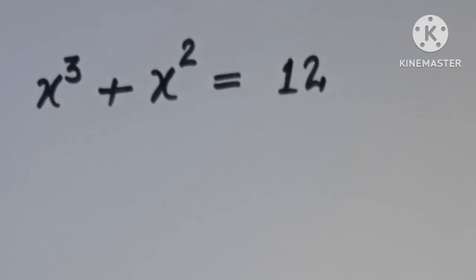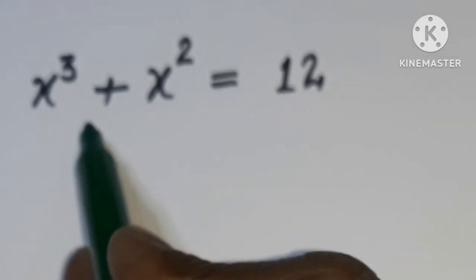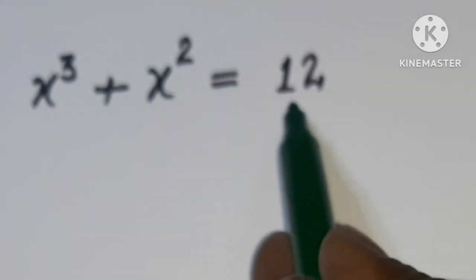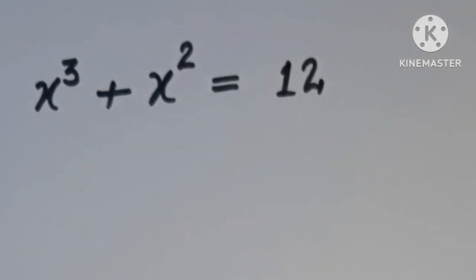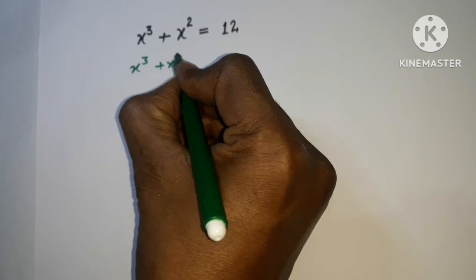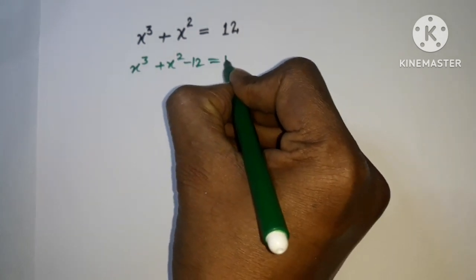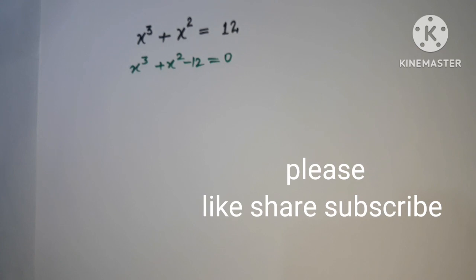Welcome back to Triple X Learning. Today we have this question on your screen: x³ + x² = 12. I need to find the value of x so that we can satisfy this equation, written as x³ + x² - 12 = 0.